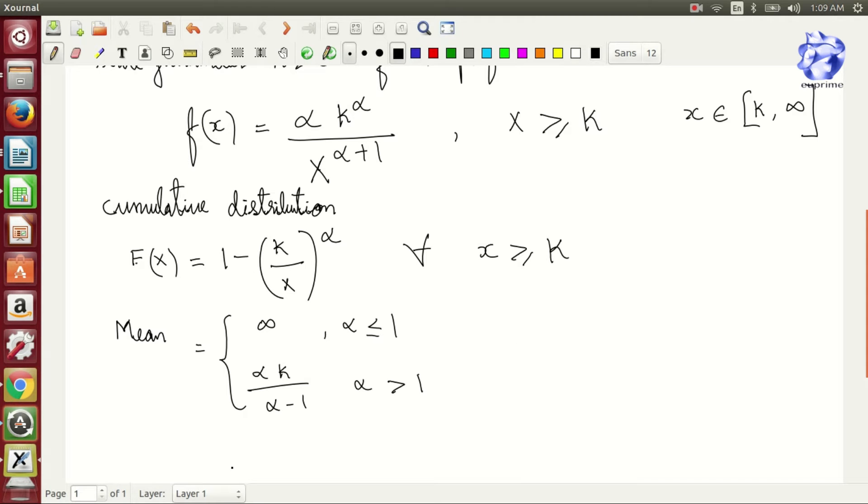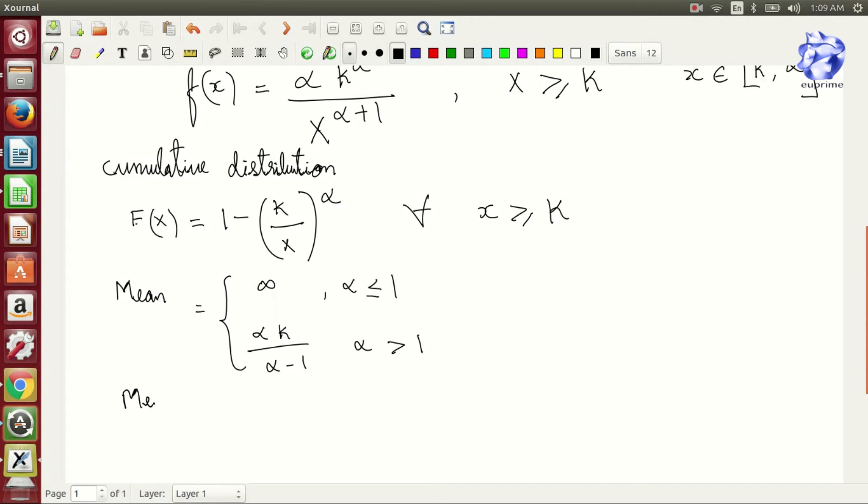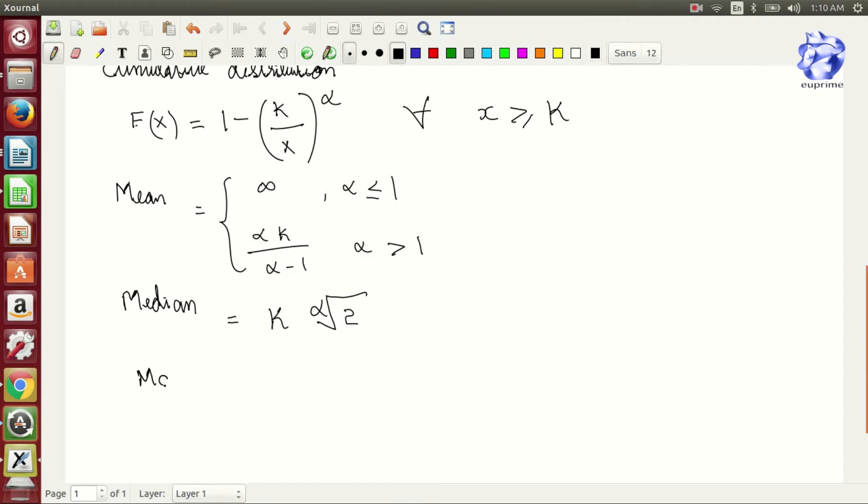The median is given as K times two to the power (one by alpha). The mode is given by K.